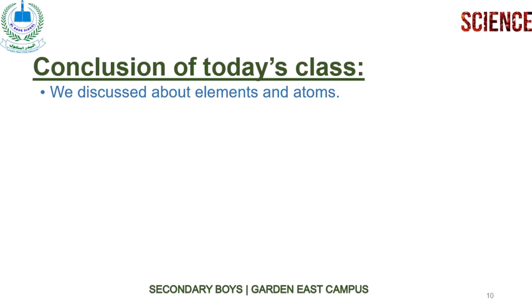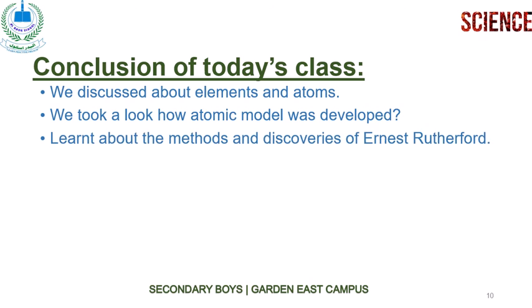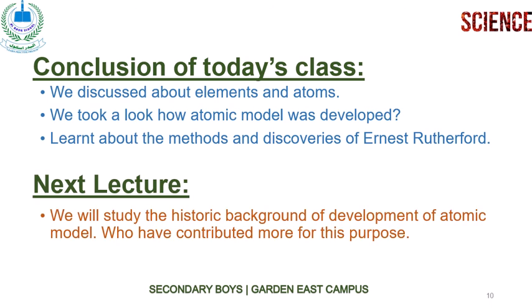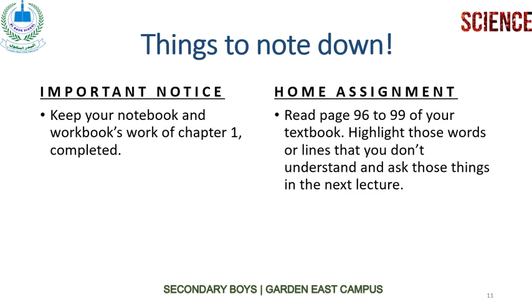In this class, we discussed elements and atoms — what they are, their examples, and their definitions. We also looked at how the atomic model was developed and learned about the methods and discoveries of Rutherford. In the next lecture, we are going to study the historic background of the development of the atomic model and the contributions of other scientists. Important note: keep your notebook and workbook clean. Home assignment: read pages 96 to 99 of your textbook and highlight or underline words you don't understand to ask in the next lecture. Jazakallah.